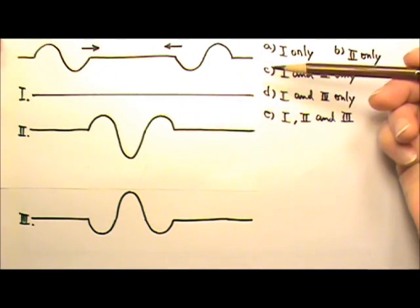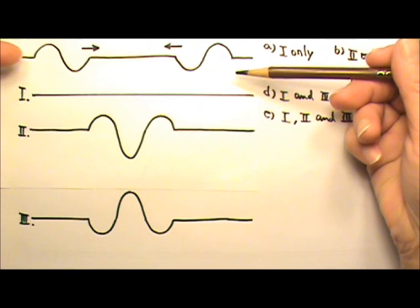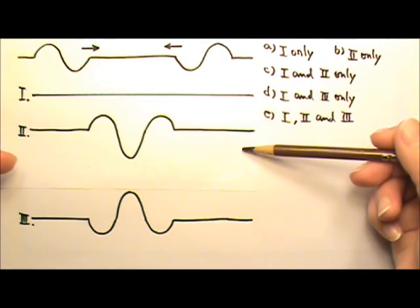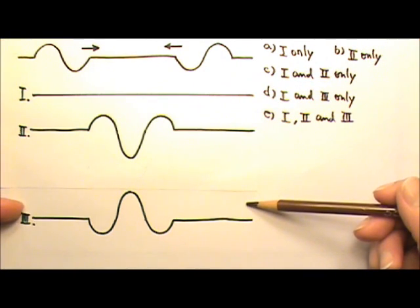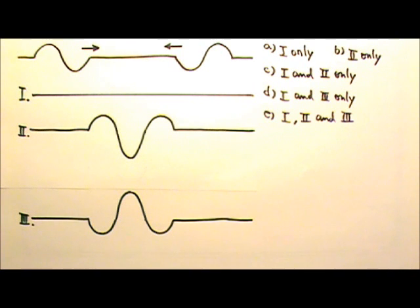Two wave pulses are moving toward each other in the same medium. Which of the following interference patterns could happen at some instant during the interference? You have these answer choices.